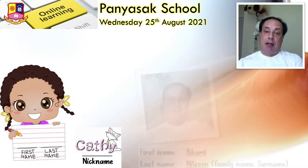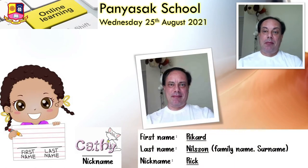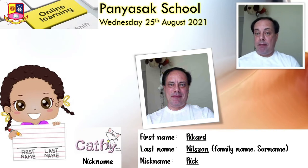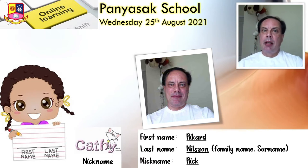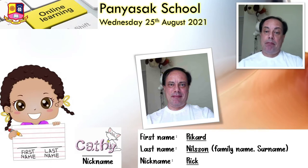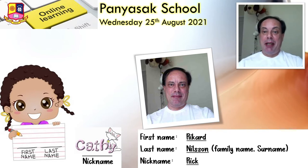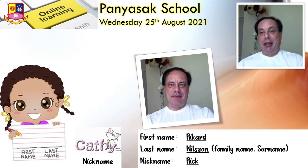My first name is Richard — it's spelled R-I-K-A-R-D, Richard. And my last name is Nilsson, and that's my family name, so my mom and dad have the same last name. And I guess you can say my nickname is Rick. I don't mind if you call me Rick — my nickname is Rick.